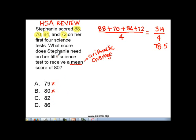Now, the problem here is we do not know what is that fifth science test. Since we do not know that one, let us use a variable to represent that. Let's use the variable x to represent Stephanie's fifth science test score. And therefore, our equation now would look like this.